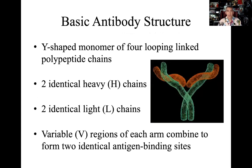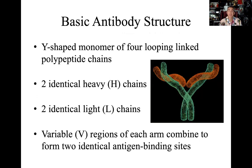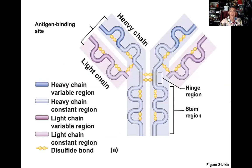So, basic antibody structure: these are Y-shaped. We consider them monomers, but they're actually four parts linked together. We have two identical heavy chains — heavy because molecularly they weigh more, shown in green. And then in orange, you have your light chains, because they're molecularly smaller and weigh less.